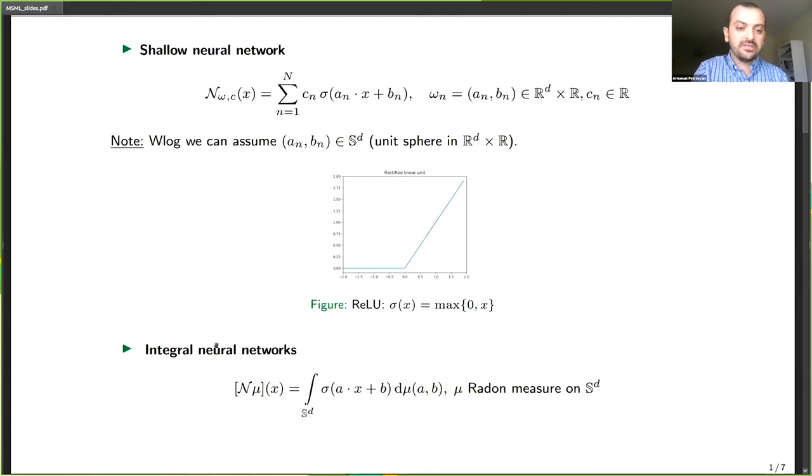So having that in mind, we define the integral neural networks, which are functions of the form presented in the slide. So it integrates the Sigma(A·X + B) against a Radon measure on S^D, so Radon measure which has a finite total variation. So this function is well-defined and we think of it as a generalization of the finite neural network. We can think of it as, basically when we discretize this kind of integral, we end up with a shallow network, but we prefer to think of it as a mathematical framework for looking at the finite shallow neural networks. And it will be apparent, especially at the last slide of my presentation, why this is the way we look at it.